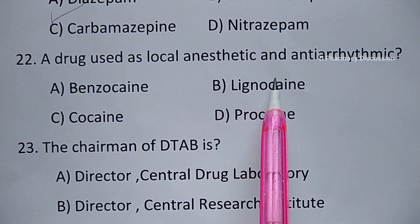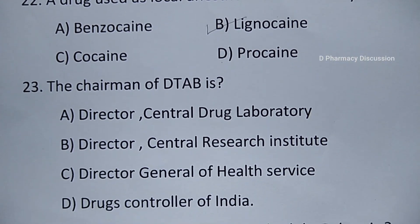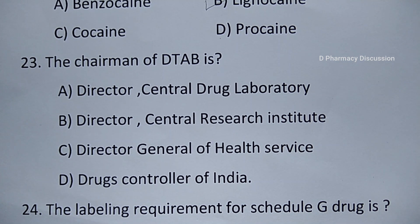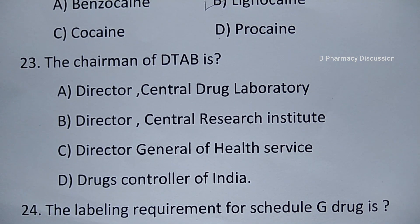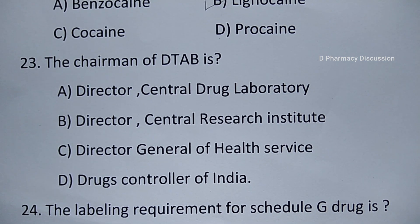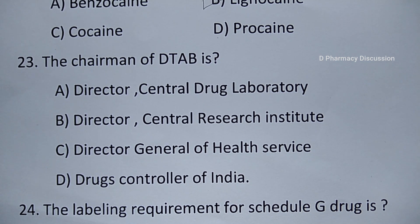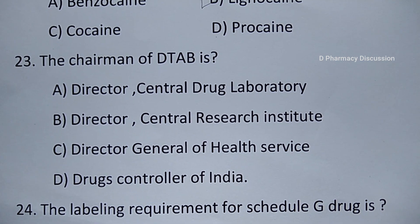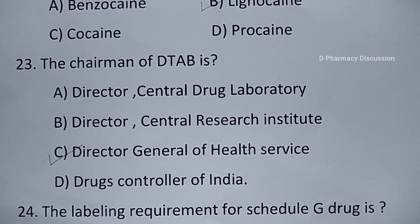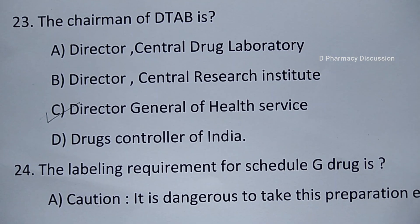Question number 23: the chairman of DTAB is — option A. Director, Central Drug Laboratory, B. Director, Central Research Institute, C. Director General of Health Services, and option D. Drugs Controller of India. Correct answer is option C, that is Director General of Health Services.